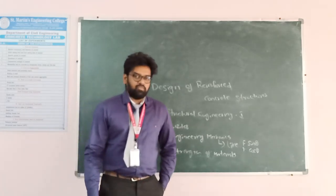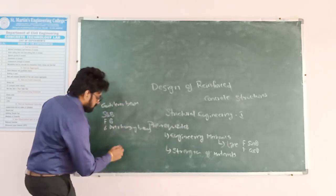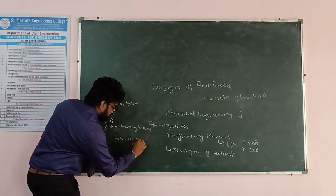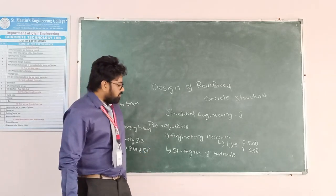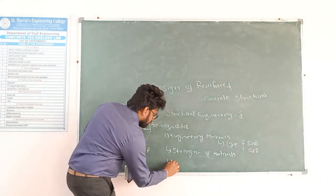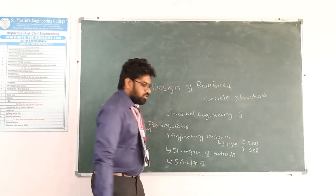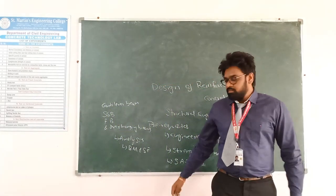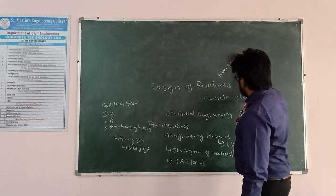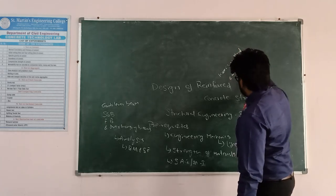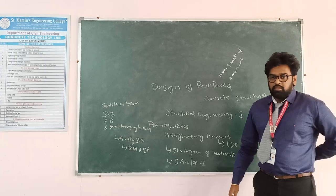In Strength of Materials we also learn how to do analysis of beams — to find out bending moment and shear force. Then in the next semester we get Structural Analysis 1 and SA2, where we determine bending moment and shear force for different types of beams and frames using methods like the Kani's method and moment area method.